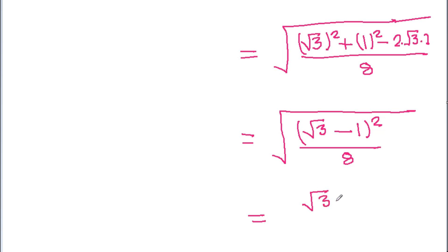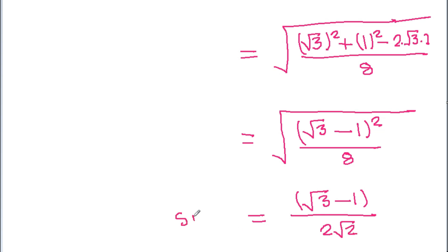So we get root 3 minus 1 by root 8, which is 2 root 2. Therefore, sin 15 degree is equal to root 3 minus 1 by 2 root 2.